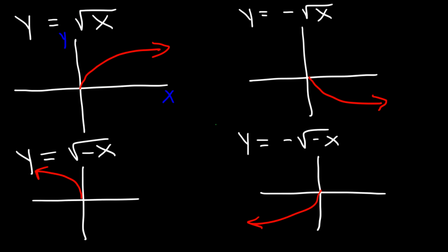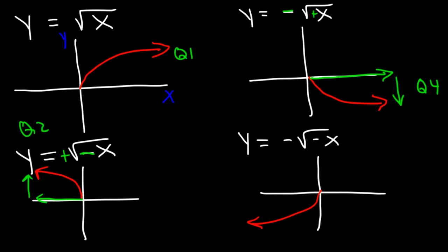In the second example, x is positive but y is negative — so you go right and down, towards quadrant 4. In the third example, x is negative and y is positive — left and up, towards quadrant 2. In the last example, x is negative and y is negative, so it goes towards quadrant 3. You can use the signs to determine in what direction the graph travels.